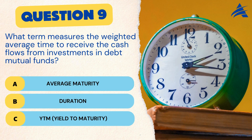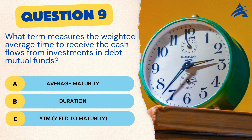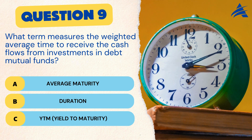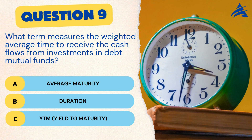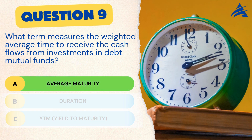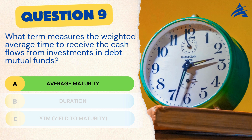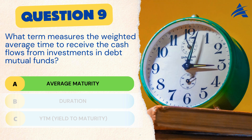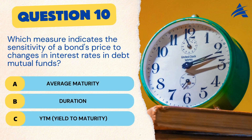Question 9. What term measures the weighted average time to receive the cash flows from investments in debt mutual funds? A. Average maturity. B. Duration. C. Yield to maturity. The correct answer is A. Average maturity. Average maturity provides insight into the expected time frame for receiving returns on your investment, helping you align your investment goals with your time horizon.